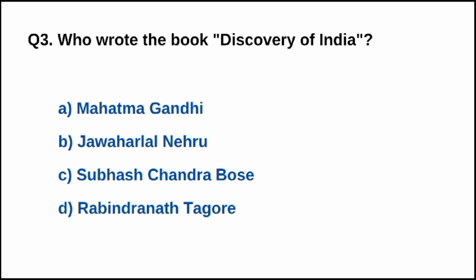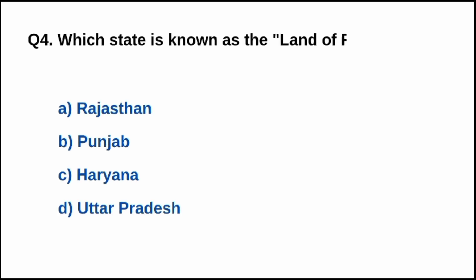Question number three: Who wrote the book 'The Discovery of India'? The right option is B. Question number four: Which state is known as the land of five rivers? The right option is B, Punjab.